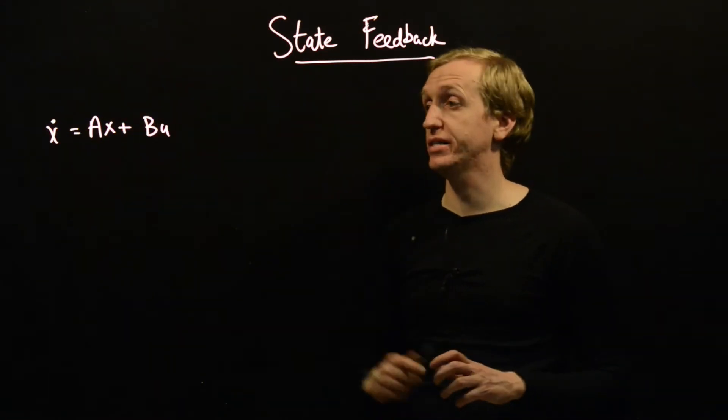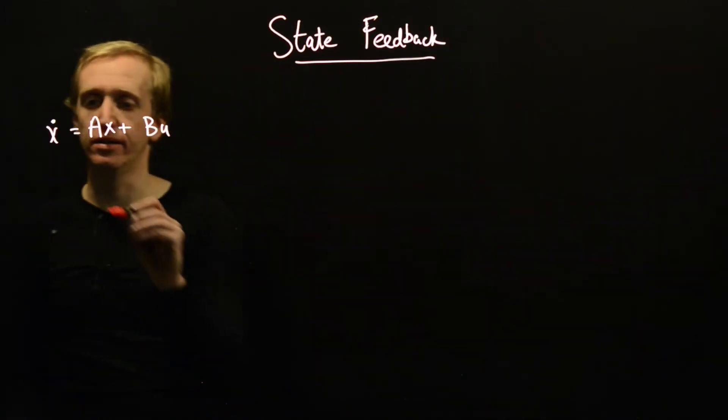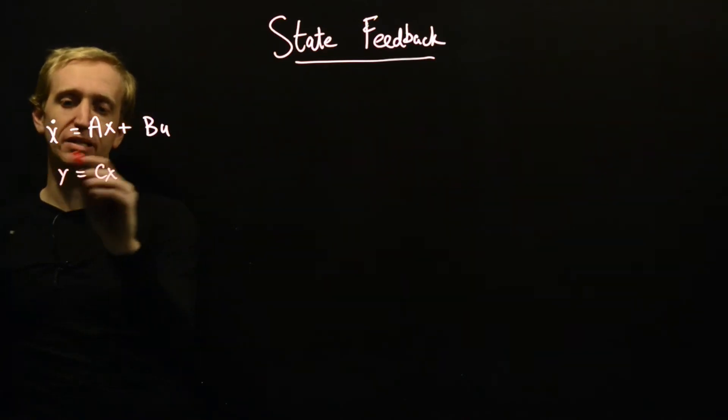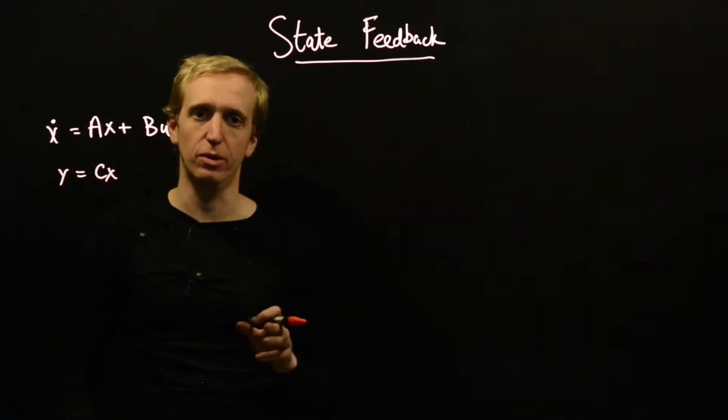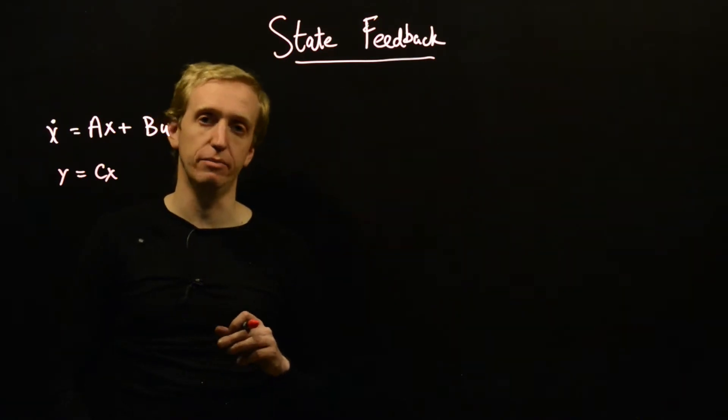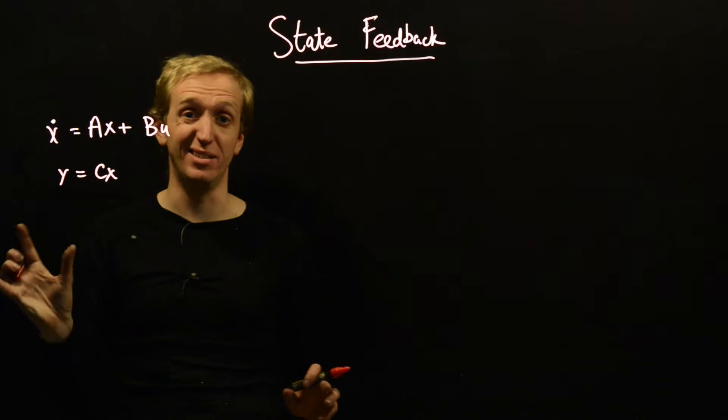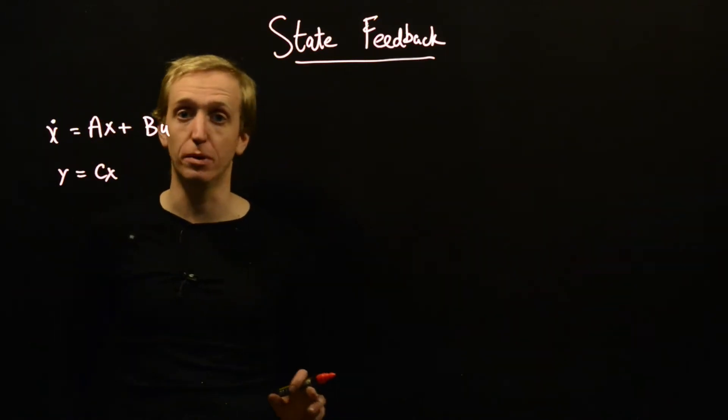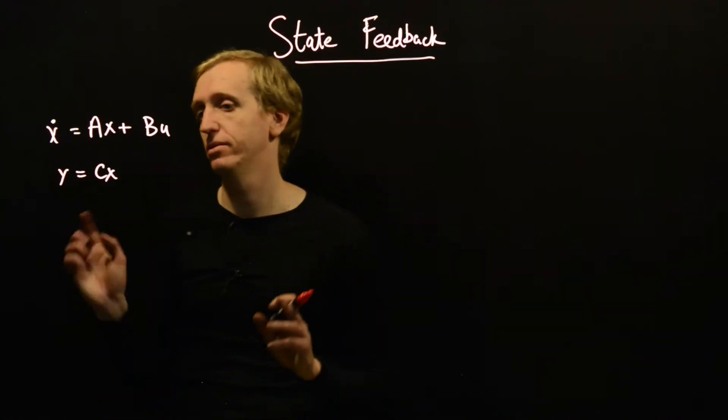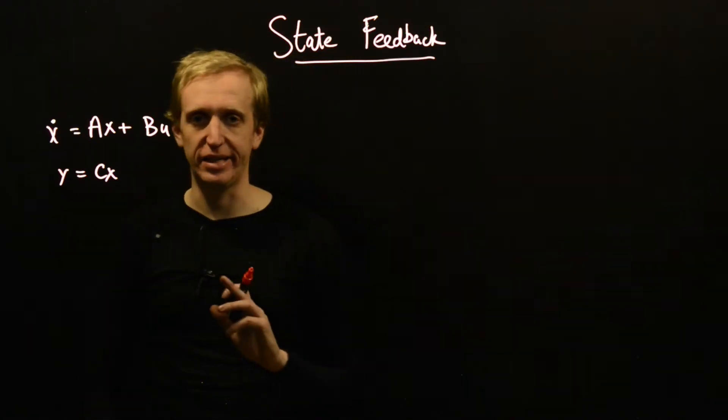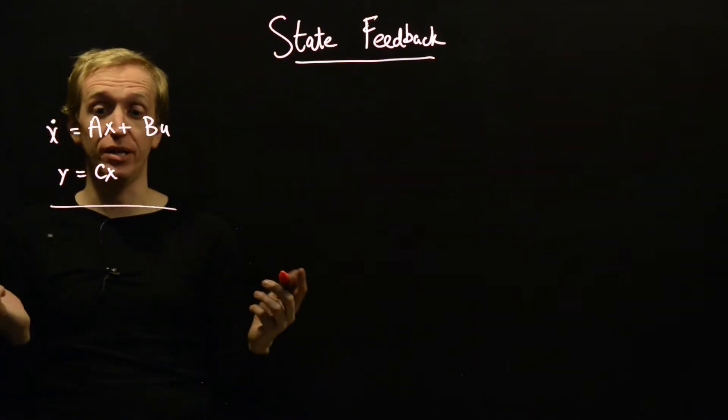So we've got some state space model. We're not going to write down the equation for y, we're not going to need it. Well, let's do it anyway. So y is equal to Cx. Let's do it because we're not going to add the direct term. It doesn't matter for state feedback, but it will start to matter when we include our observer. There's no great issue. First of all, having no direct term in the process is essentially without loss of generality. All reasonable processes will have no direct term. And also you can modify this whole method to account for it. It just makes everything a bit messier. So we'll just not add a d for a simple life.